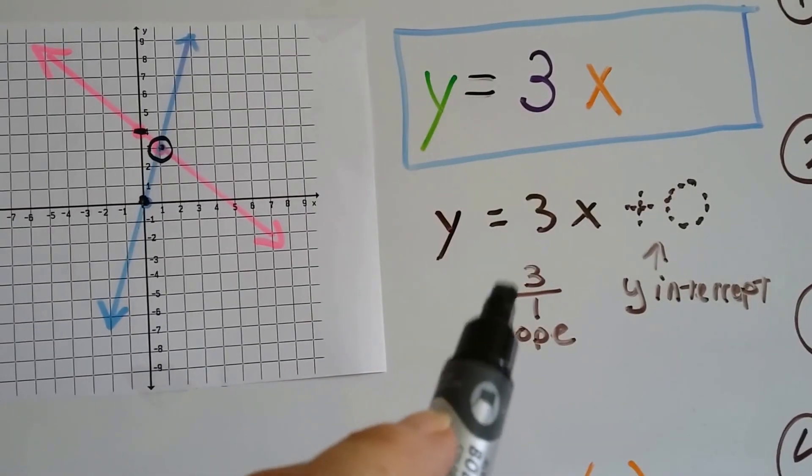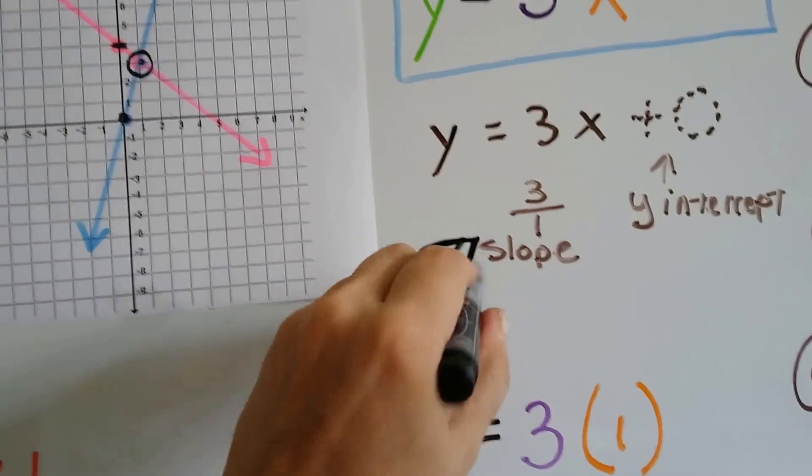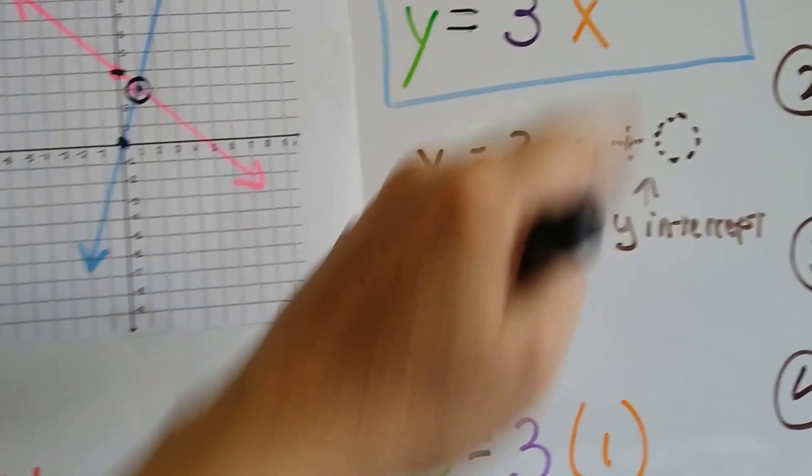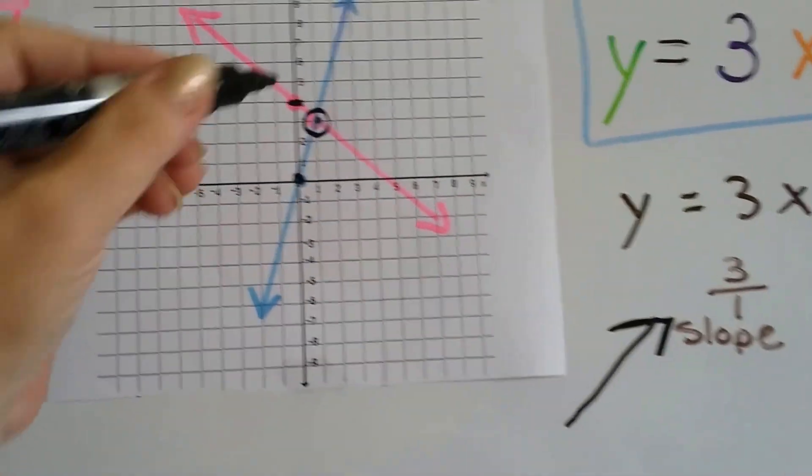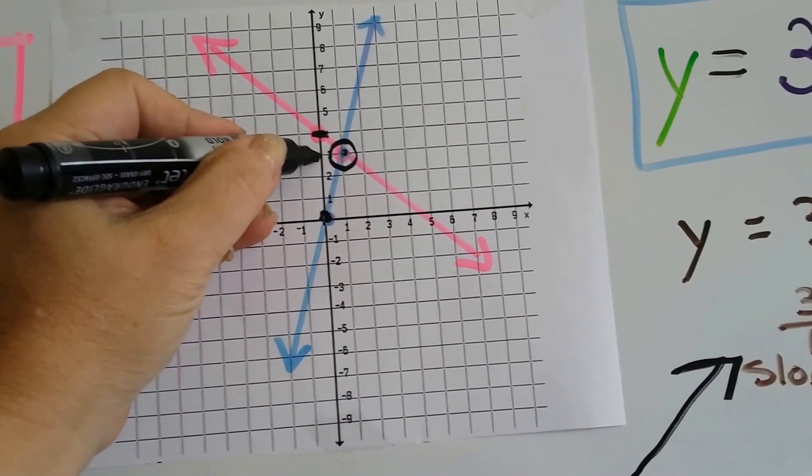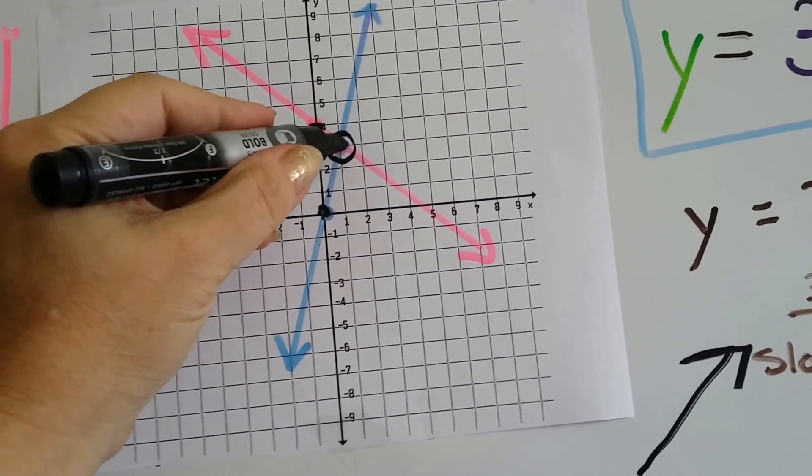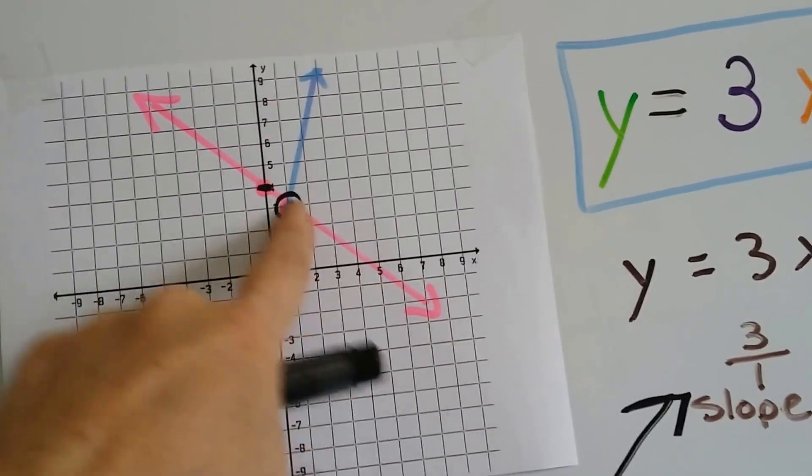Now we know we have a positive slope, so we know it's going to rise to the right. Our line is going to go this way, and we know it's going to go up 3 and over 1 for our rise and our run. We're at 0, so we go 1, 2, 3, and our run is 1, so we go over 1. And look, it's on that point, that circled one that the pink one went through.